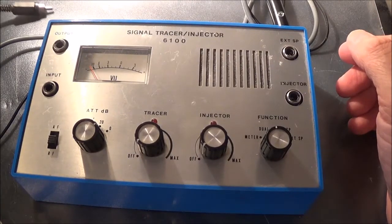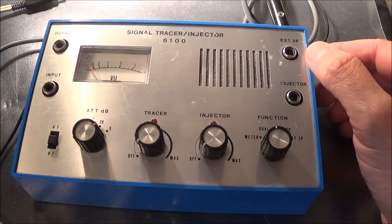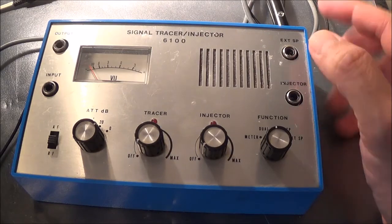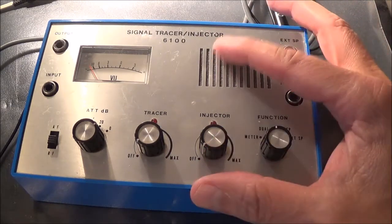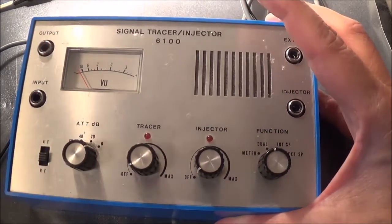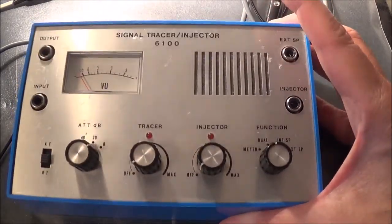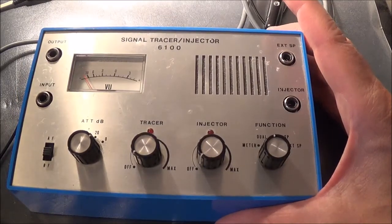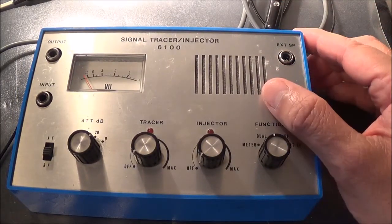Hello and welcome. Today I'm going to be doing another one of my mini reviews. Lately I've been using this piece of equipment a lot. This is a signal tracer injector, made by a company called Sansei, model number 6100.